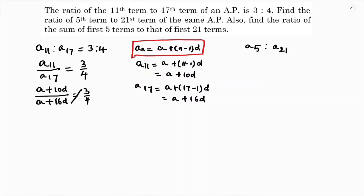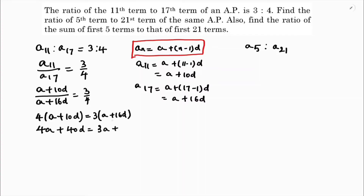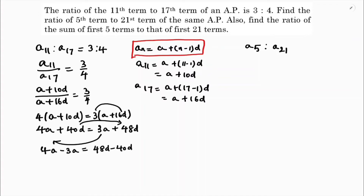Now I will cross multiply. So 4 times a plus 10d equals 3 times a plus 16d. So 4a plus 40d equals 3a plus 48d. If I transfer all like terms, a towards one side and d towards the other side, so 4a minus 3a equals 48d minus 40d.